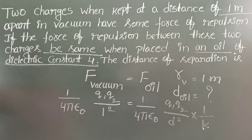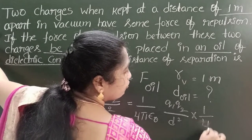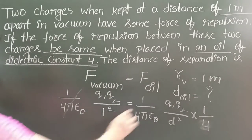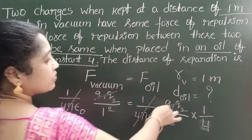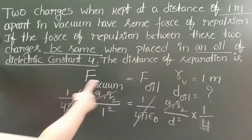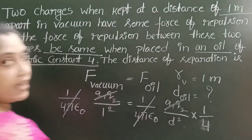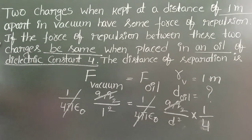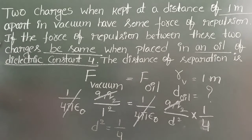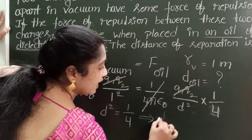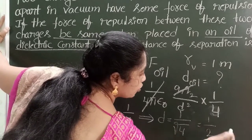Here the dielectric constant K is 4, so substitute 4 in its place. On both sides, 1/4πε₀ cancels and q1 q2 also cancels. So on the LHS, 1 remains, and on the RHS, 1/(4d²) remains. From this, d² = 1/4, so d = 1/√4, which equals 1/2.